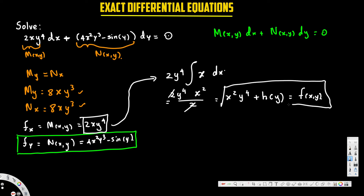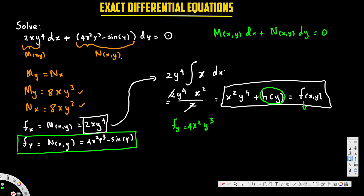This is our f(x,y), but we still need to determine what h(y) is before we can write the final answer. To find h(y), I'll take the partial derivative of f with respect to y and compare it to N. Taking the derivative of x²y⁴ with respect to y, treating x as a constant, x² remains and 4y³ comes down, giving 4x²y³. The h(y) term becomes h′(y).